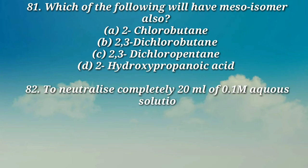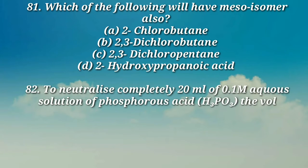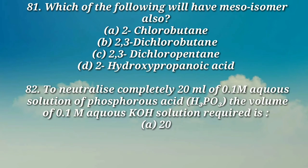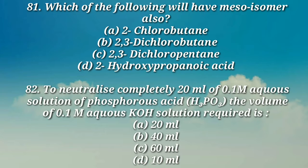Question number 82: To neutralize completely 20 milliliters of 0.1 M aqueous solution of phosphorous acid (H3PO3), the volume of 0.1 M aqueous KOH solution required is: (a) 20 milliliters, (b) 40 milliliters, (c) 60 milliliters, (d) 10 milliliters.